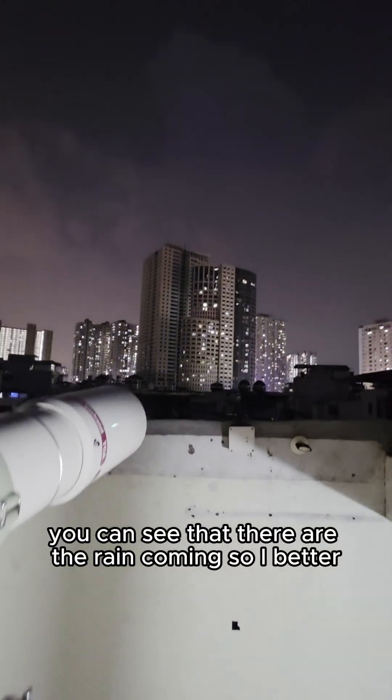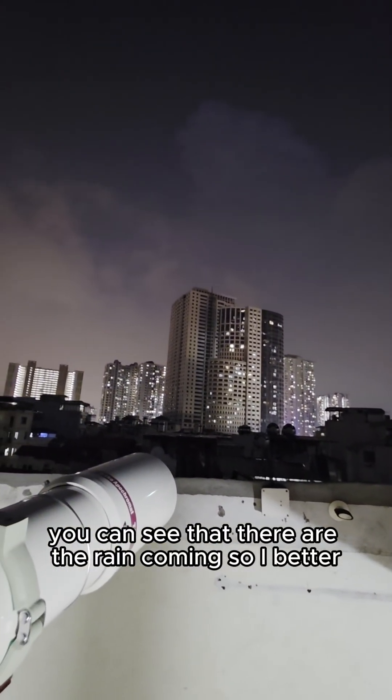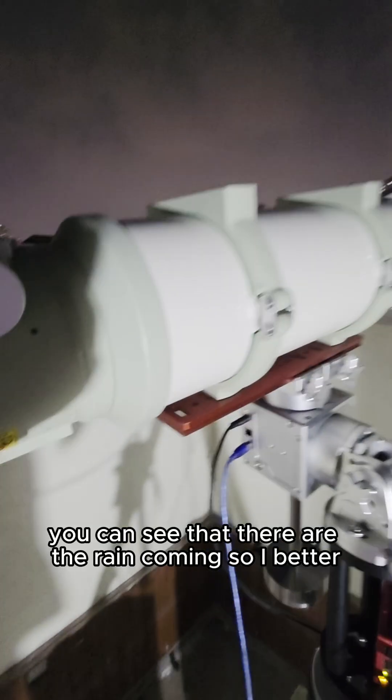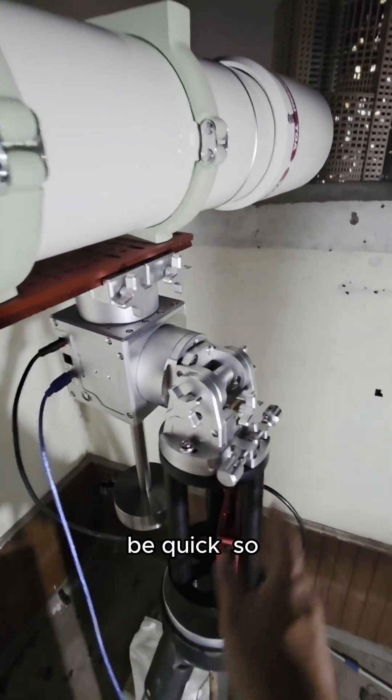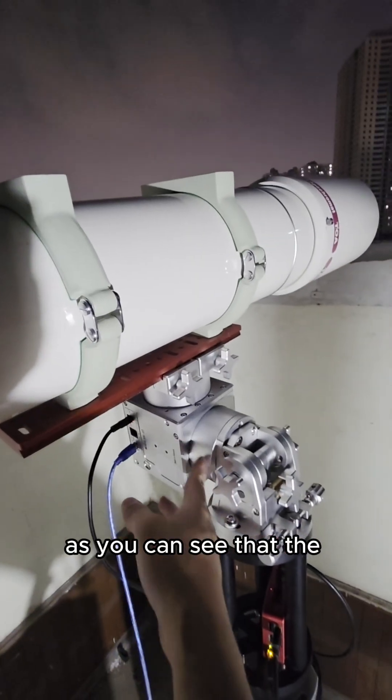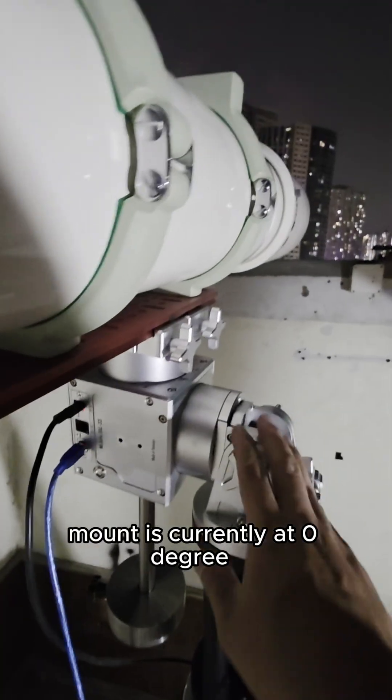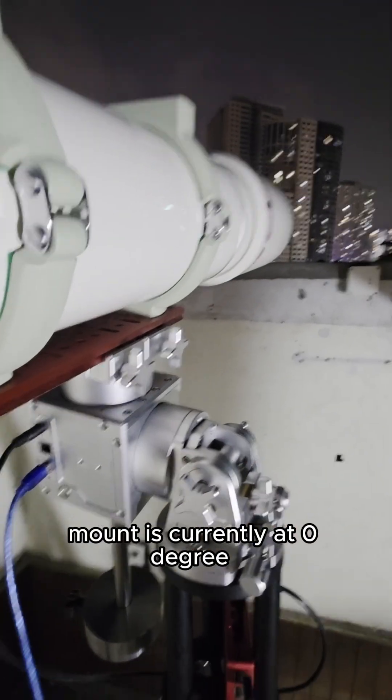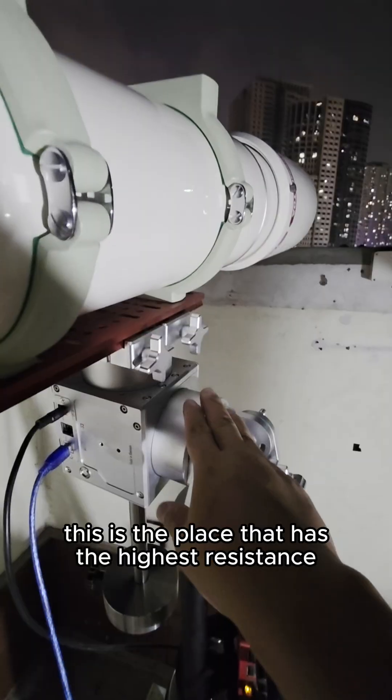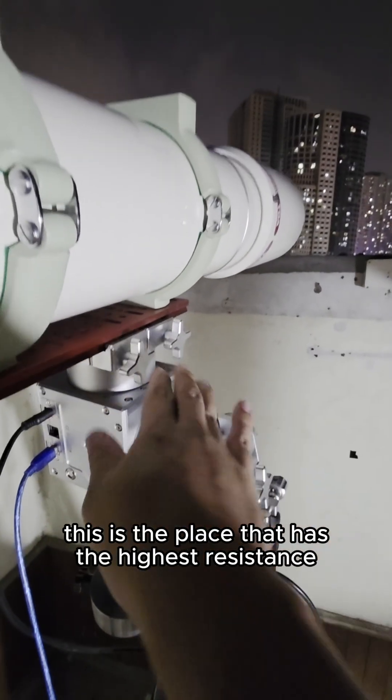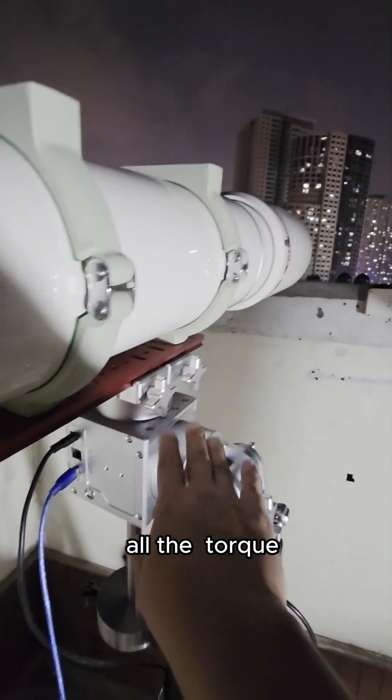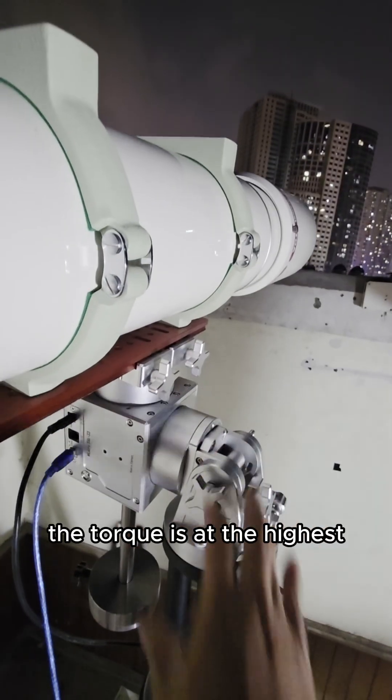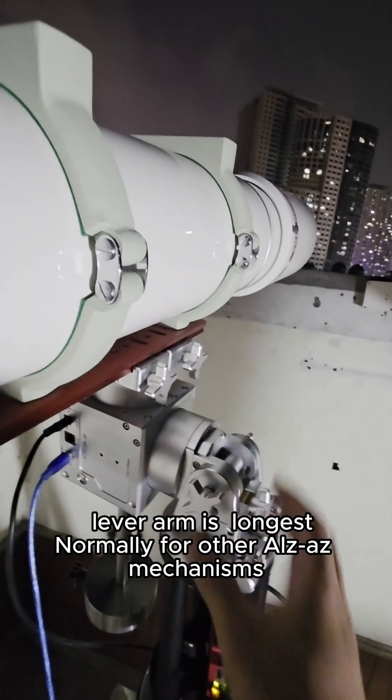You can see that the rain is coming, so I better be quick. So as you can see the mount is currently at zero degrees. This is the place that has the highest resistance. All the torque is at the highest. The lever arm is the longest.